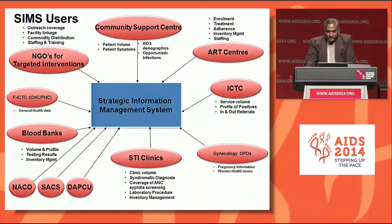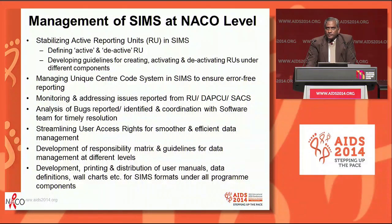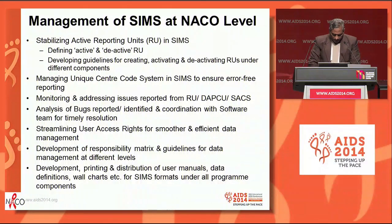There are benefits for the various centers. In terms of STI clinics, it estimates the clinic volume, the number covered by syndromic diagnosis, the coverage through syphilis screening of pregnant women, and the number of laboratory procedures. Similarly, for various centers, the services which are carried out are assessed. For management at the center level, we have to stabilize the active reporting units by defining what the active units are and developing guidelines for creating, activating, and deactivating them. Managing a unique center code system so that we are able to identify the center. Monitoring and addressing issues coming from various units, and analysis of bugs which are reported from time to time, and working with the consultant to resolve these bugs. Streamlining the user access rights and development of responsibility metrics and guidelines for data management, and development of user manuals.